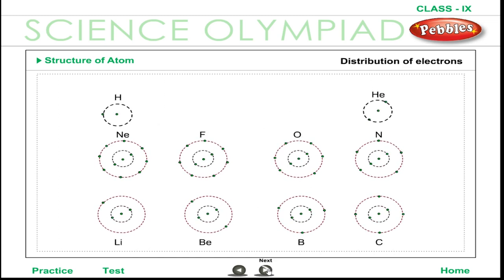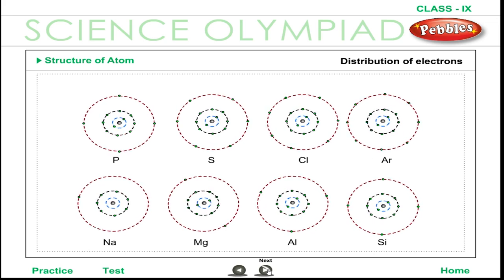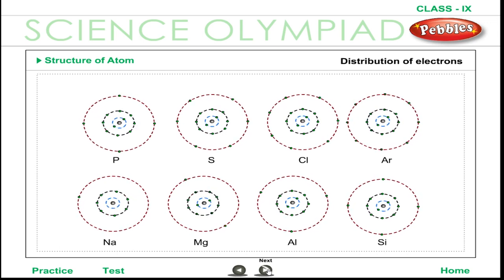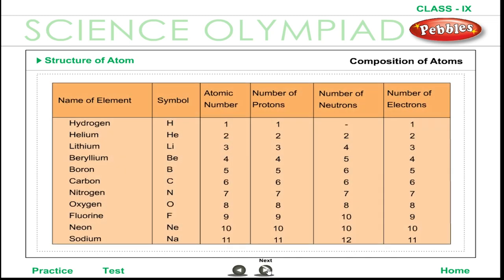The following rules are followed for writing the number of electrons in different energy levels or shells. The maximum number of electrons present in a shell is given by the formula 2N², where N is the orbit number or energy level index (1, 2, 3, ...). The composition of atoms of the first 18 elements with electron distribution in various shells is given in the table.